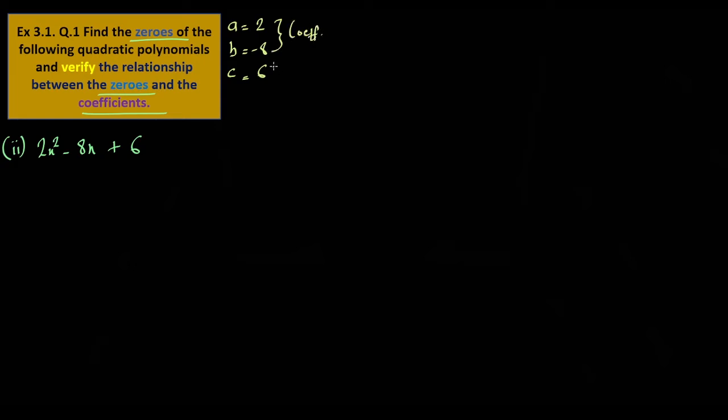What is the relationship between zeros and the coefficients? The relationship between a, b, c. Here a=2, b=-8, c=6. b is the coefficient and c is the constant.